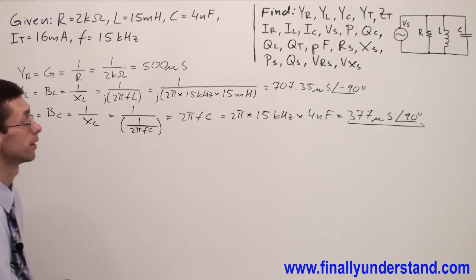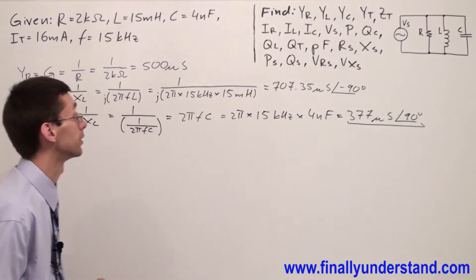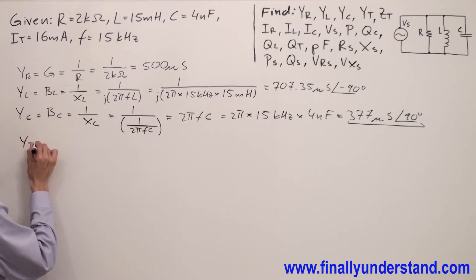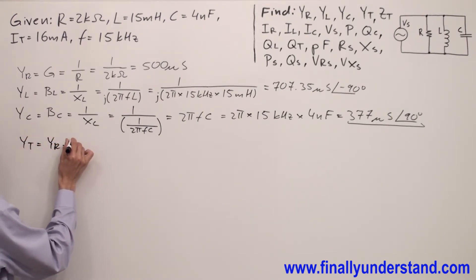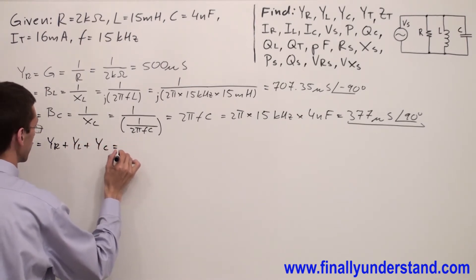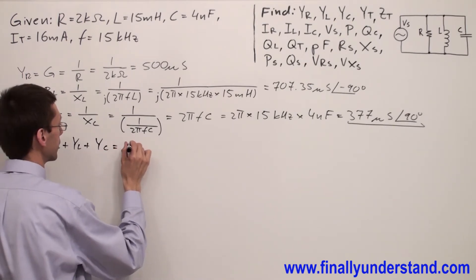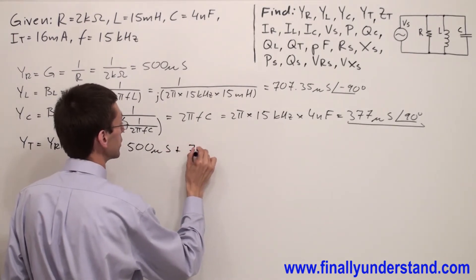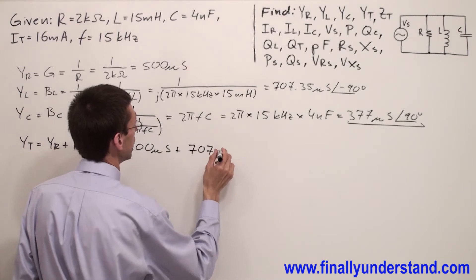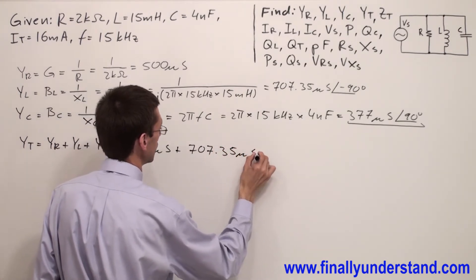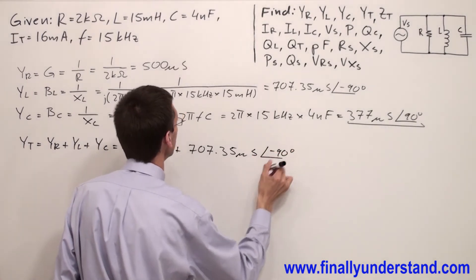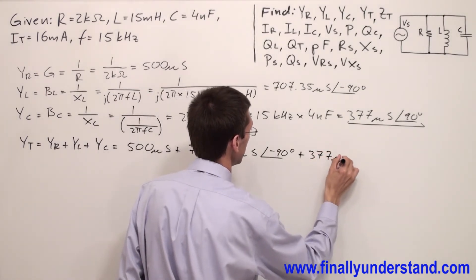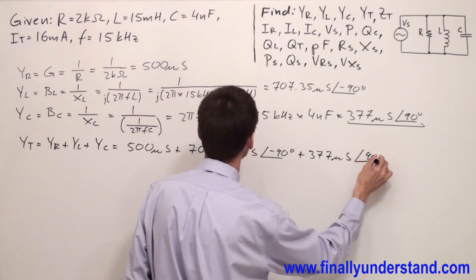Next we can find the total admittance. Total admittance is equal the sum of all these three admittances. Y_total is equal Y_R plus Y_L plus Y_C. So I have Y_R 500 microsiemens, plus Y_L which is equal 707.35 microsiemens and angle of negative 90 degrees, plus 377 microsiemens and angle of 90 degrees.